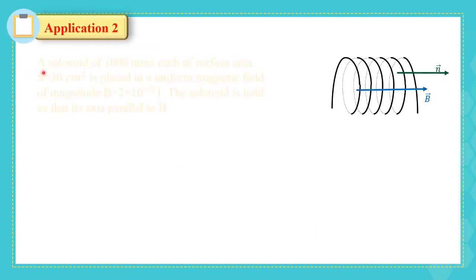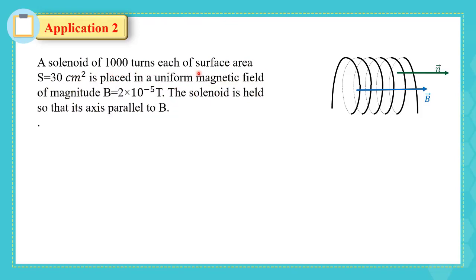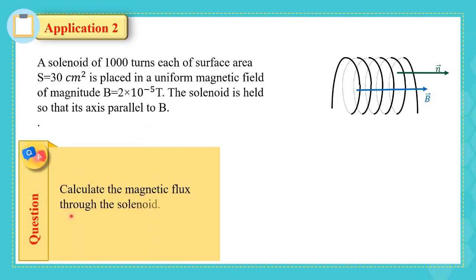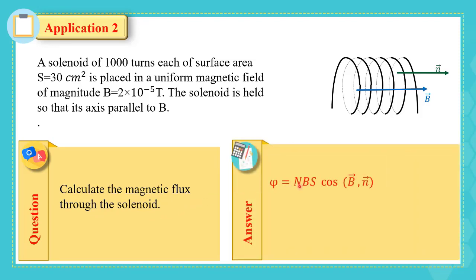Application 2: A solenoid of 1000 turns, each with surface area S = 30 cm², is placed in a uniform magnetic field of magnitude B = 2 × 10⁻⁵ Tesla. The axis of the solenoid is parallel to B. Calculate the magnetic flux through the solenoid. Φ = NBS cos α = 1000 × 2 × 10⁻⁵ × 30 × 10⁻⁴ × cos 0° = 6 × 10⁻⁵ Weber.